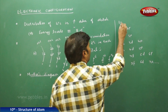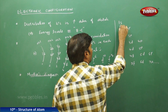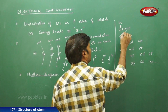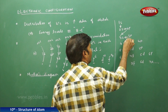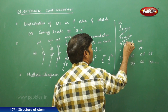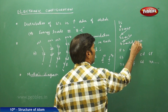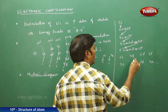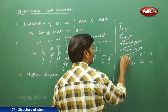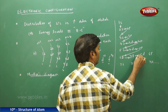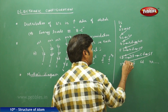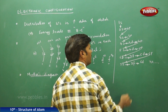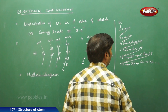In Moller's diagram, first fill electrons in the 1s orbital, then 2s, 3s, 3p, then 4s, then 3d, then 4p, then 5s, then 4d, then 5p, then 6s, then 4f, 5d, 6p, then 7s, then 5f, 6d, and finally 7p and so on.